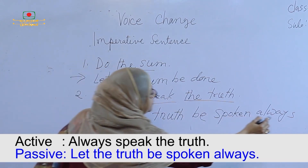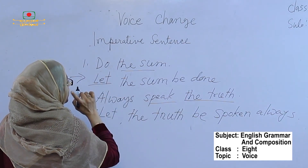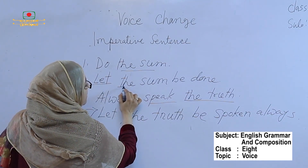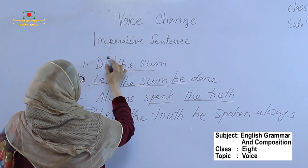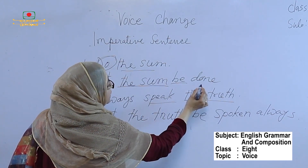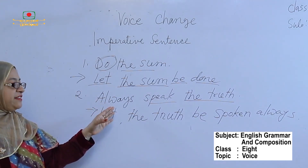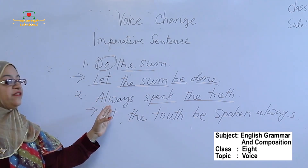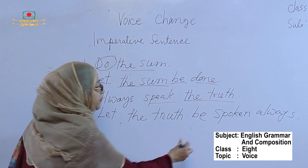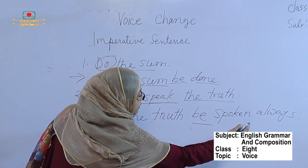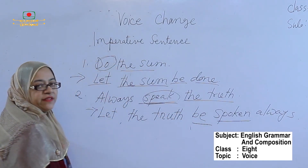Look at the board. The first one is 'Do the sum' — here we use 'let', and 'the sum' becomes the subject, followed by 'be' and the past participle form of the verb 'do': done. So it will be 'let the sum be done'. The second one: 'Always speak the truth' — we use 'let the truth be spoken always'.